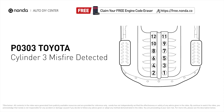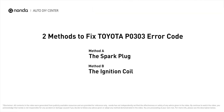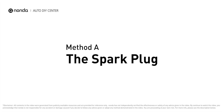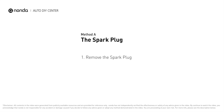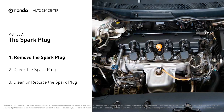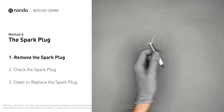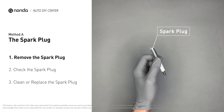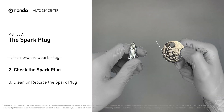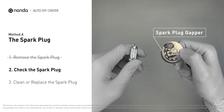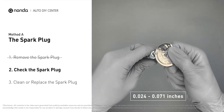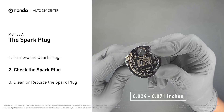Here are two of the most practical solutions to fix Toyota's P0303 error code. Method A: the spark plug. The spark plugs are located at the engine end of the wires, under the plug covers that attach them. First, carefully remove the spark plug. Use a spark plug gapper to check the spacing — normally the spacing should be between 0.024 to 0.071 inches.